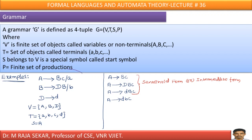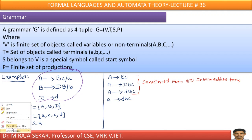For example, consider this grammar. A goes to BC — this is one production. A goes to small a — another production. B goes to DB. B goes to small b. Capital D goes to small d. Totally, there are five productions in this particular grammar.